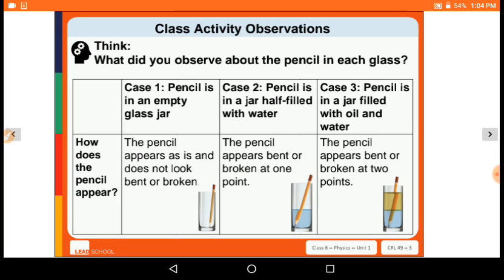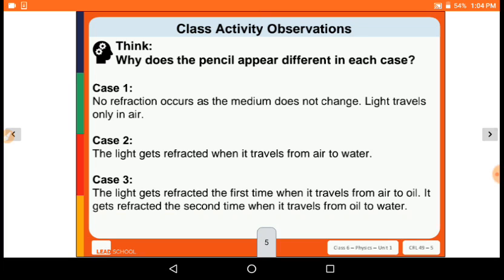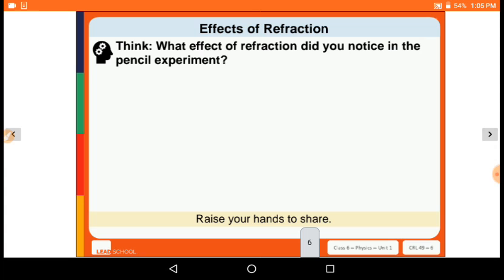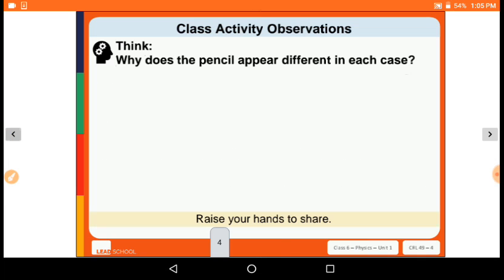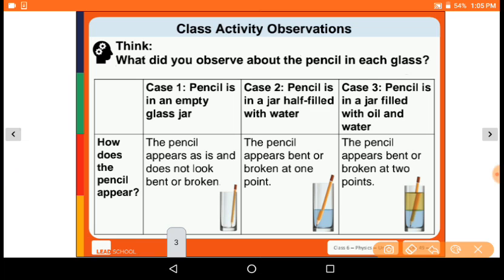This is practice question number 16.3. The three cases in the table you are seeing here - case 1: pencil is in empty glass, case 2: pencil is in a jar half filled with water, and case 3: pencil is in a jar filled with oil and water. How does the pencil appear? You have to write this in the first row. Then after, write the reasons for cases 1, 2, and 3 - why do you think the pencil appears different in each case? Then, what effect of refraction did you notice in the pencil experiment? So these two slides are practice question 16.3.